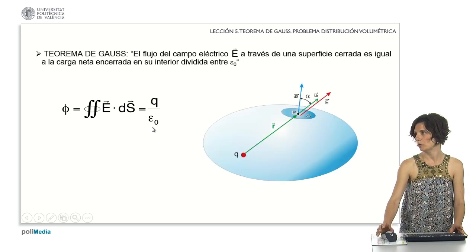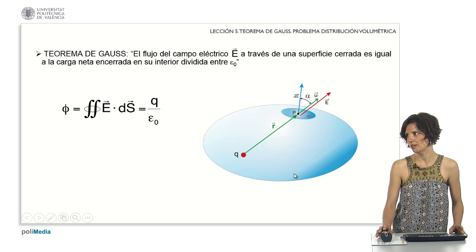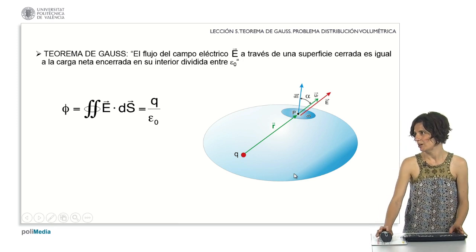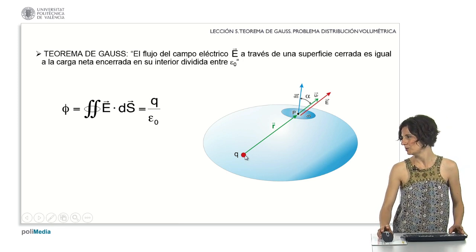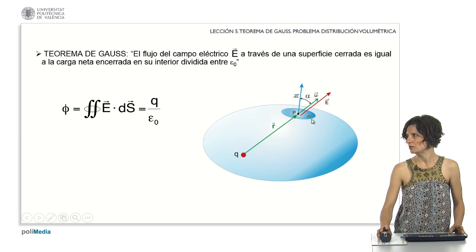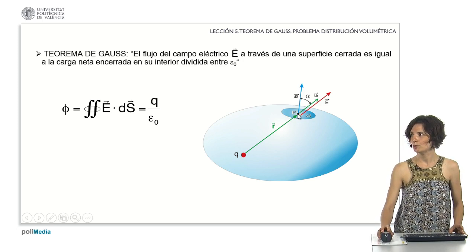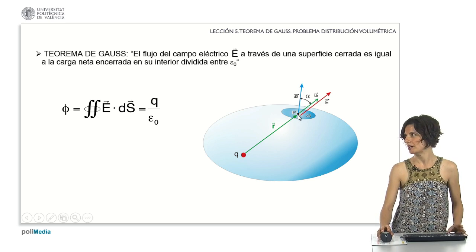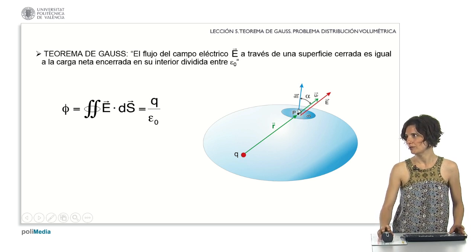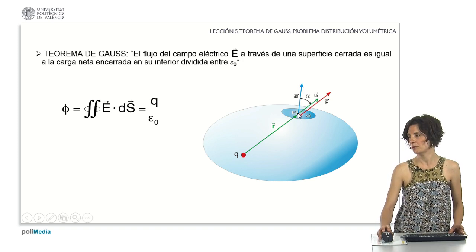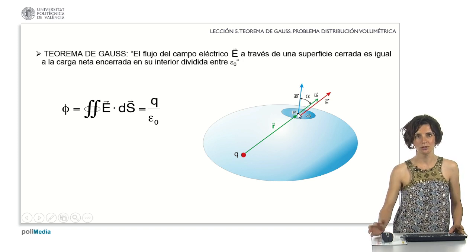In the drawing, we have depicted a Gaussian surface enclosing a point charge q. At point P, we have marked a surface differential and posed the two vectors used in Gauss's law: the electric field vector and the differential vector of S, which is a vector perpendicular to the surface at that point and pointing outward.